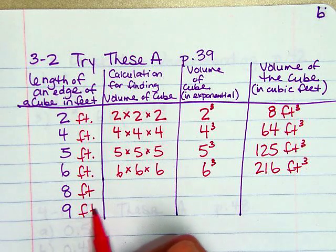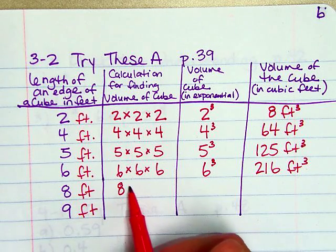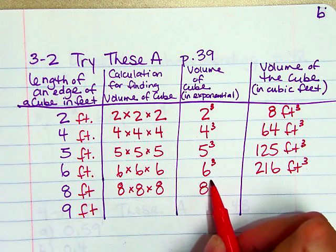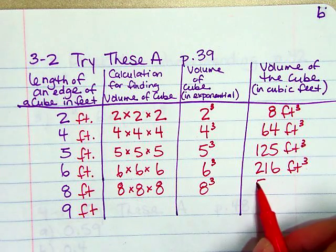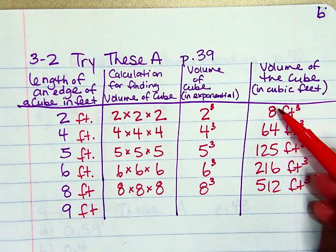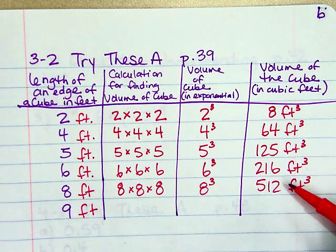And then I have 8 times 8 times 8. These cubes are getting larger and larger. So 8 cubed gives me 512 cubic feet. So these are growing quite rapidly in their volume.